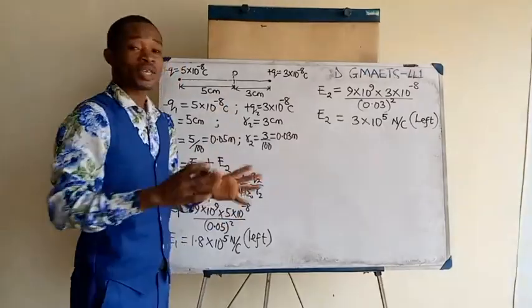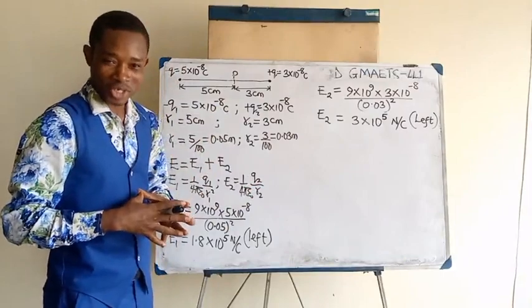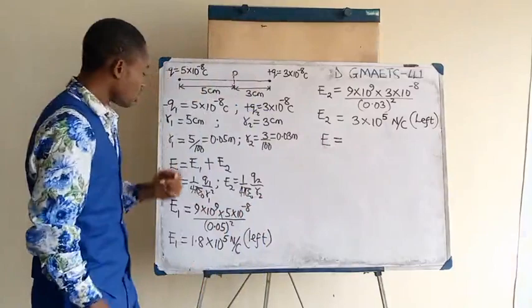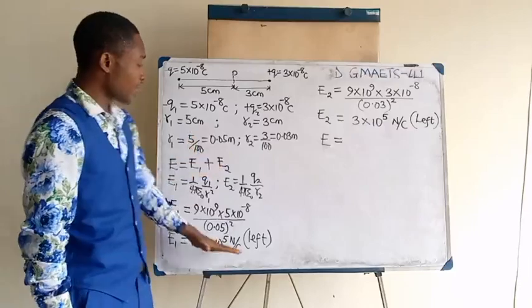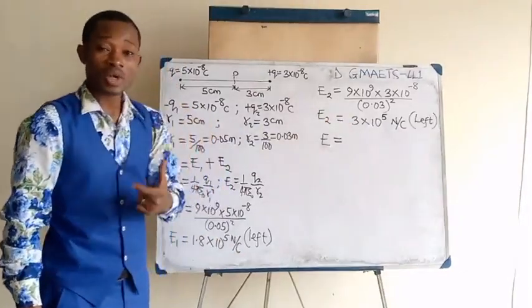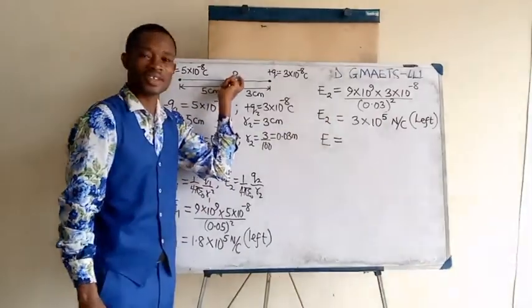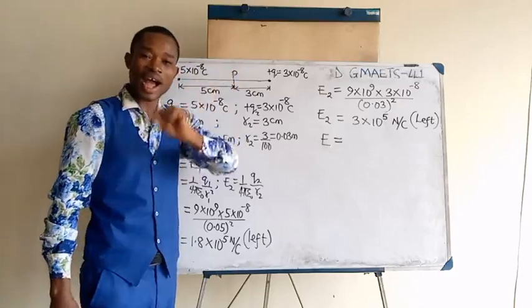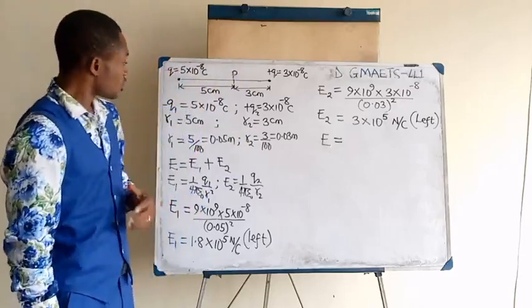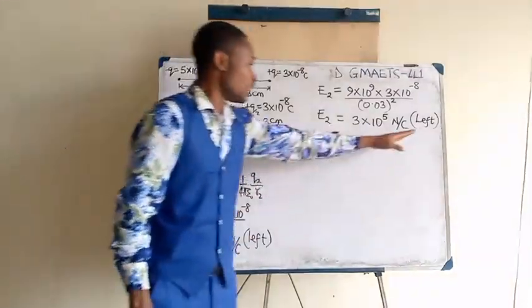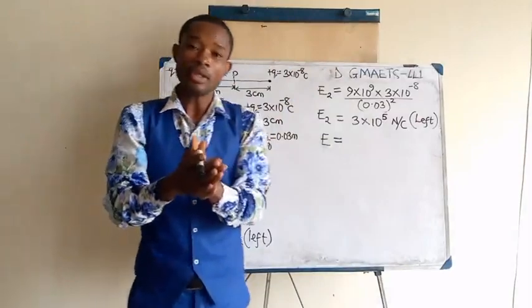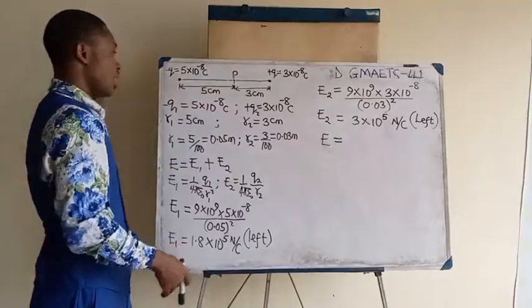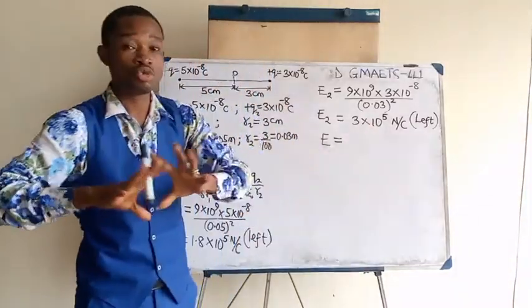At this point we are now set to complete our principle of superposition. Our E will now be equal to, am I going to do E1 plus E2 or E1 minus E2? I will go back to the direction of each of the fields. Based on what I explained using the positive test charge at point P, there is an imaginary positive test charge here where you are asked to calculate the electric field strength. E1 is moving to the left. E2 is moving to the left. Both of them are in the same direction. So according to vectors, you add them. But suppose it happens that E1 is moving to the left and E2 is moving to the right, in that case you do subtraction.